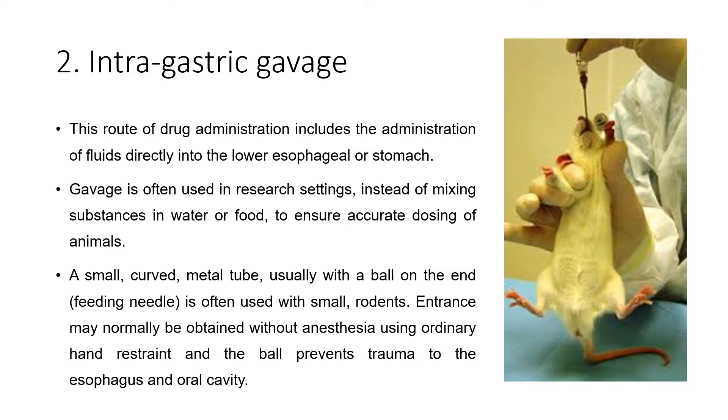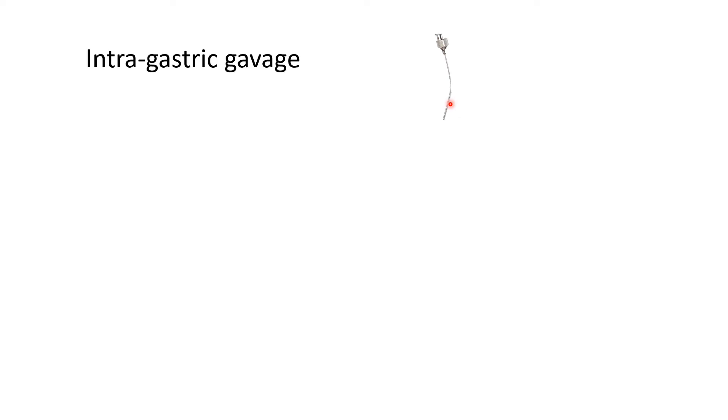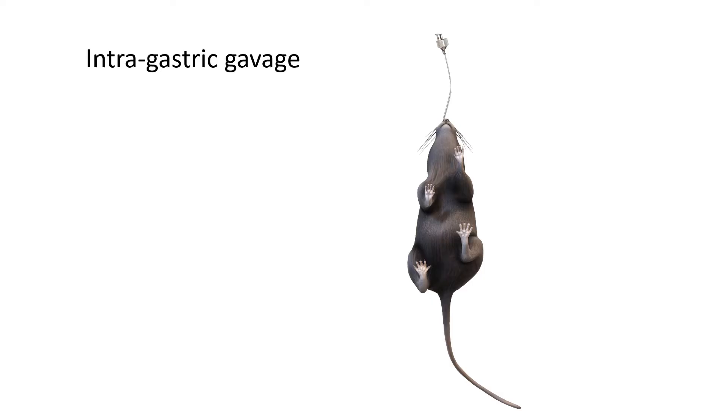Entry may normally be obtained without anesthesia using ordinary hand restraint, and the ball prevents trauma to the esophagus and oral cavity. To perform gavage, fill the syringe with the appropriate volume of material and attach the feeding needle. Hold the animal properly and place the tip or ball of the needle into the animal's mouth. The needle goes inside and releases the drug directly into the esophagus or stomach.